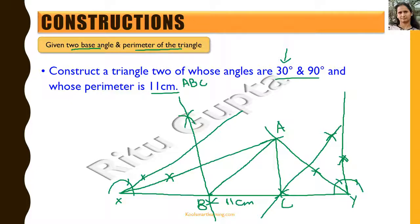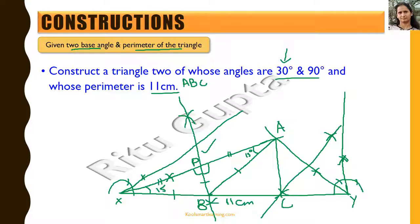Now let's verify this is the correct triangle. When we draw the perpendicular bisector of AX at midpoint P, triangles APB and XPB are congruent — the two right angles, equal segments AP and XP, and common side PB. So this 15-degree angle here equals the corresponding 15-degree angle there, and XB equals AB.